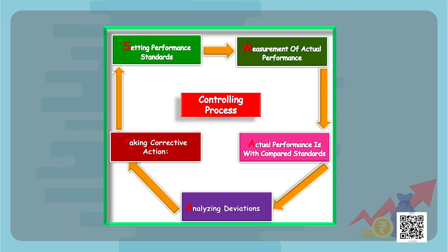While controlling we follow a specific path, so let's discuss the steps of the controlling process. The first step is setting performance standards, then we have measurement of actual performance, then we compare the actual performance with the standards that have been set already, then we analyze the deviations, and then we take corrective action.